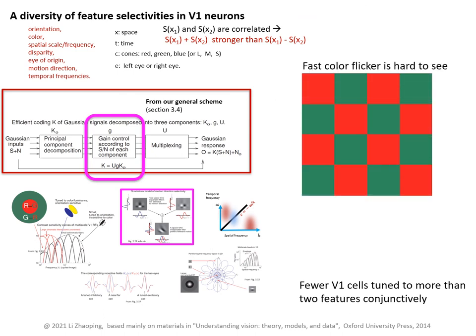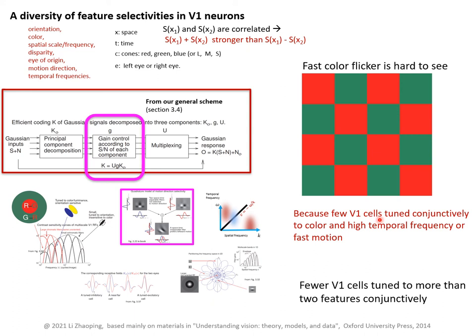Here is a perceptual consequence of this neural substrate. In a checkerboard of red and green patches, if each patch flickers in color between red and green synchronously — so when one patch turns red the adjacent one turns green — we still have a checkerboard with colors alternating in time. If the flickering is fast enough, say 30 Hz, then humans cannot see the flicker when the red and green patches have the same luminance. This is because there are few V1 cells tuned simultaneously to color and high temporal frequency or fast motion. The visual system must integrate in time to see the color, so one can see the color but not the temporal flicker.